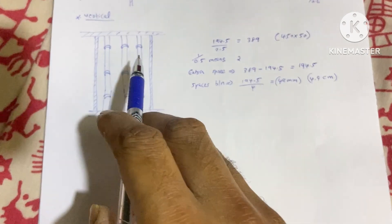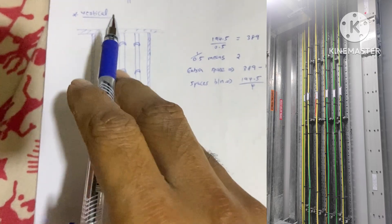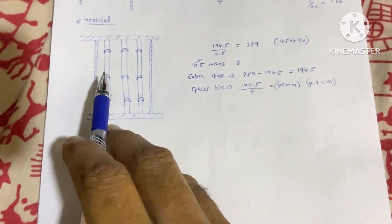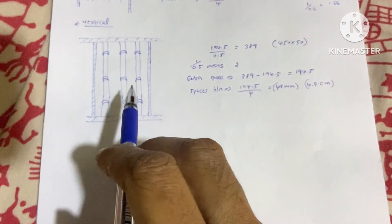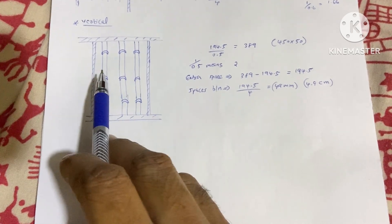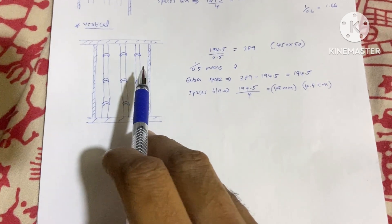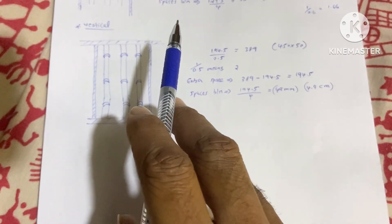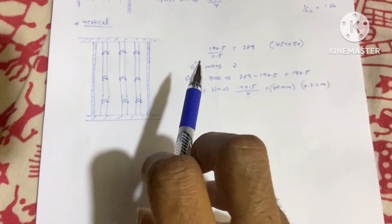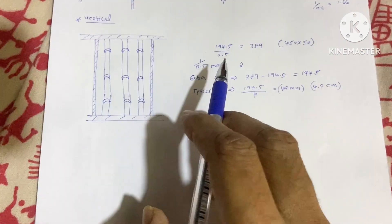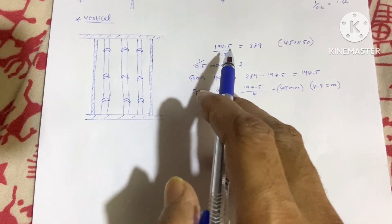Now I am going to calculate the cable tray size for a vertical cable tray. This is a sectional view showing the cable tray running from one floor to another through a cable tray riser. We have the same three cables as before — 300mm², 240mm², and 185mm² — so the total overall diameter remains 194.5mm.